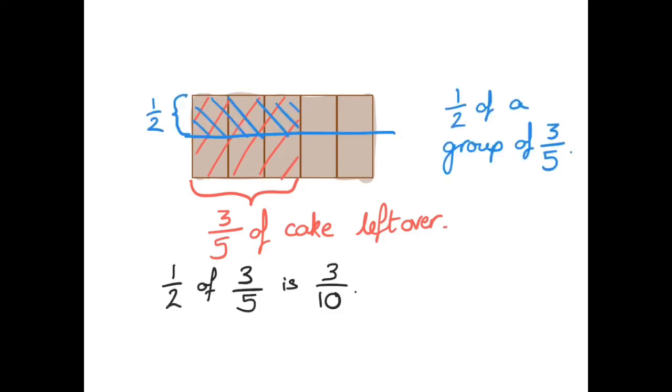I want to find half of these three fifths. So I'm going to split my model in half this way. So I've got fifths going vertically and halves going horizontally. And I can see from where the shading overlaps that there are three out of ten parts which are going to be left over.